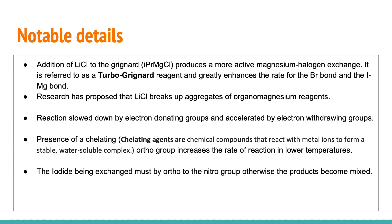This next section covers some notable and interesting details about halogen-magnesium exchange. For this reaction, the addition of lithium chloride to the Grignard reagent isopropylmagnesium chloride produces a more active halogen-magnesium exchange, referred to as a turbo-Grignard reagent, which greatly enhances the rate for the bromine-magnesium and iodine-magnesium bond exchange. Research has proposed that lithium chloride breaks up aggregates of organomagnesium reagents. The reaction is slowed by electron-donating groups and accelerated by electron-withdrawing groups. The presence of a chelating agent — where the ortho group increases the rate of reaction at lower temperatures — is also notable. Additionally, the iodine–magnesium exchange must be ortho to the nitro group; otherwise the products become mixed.